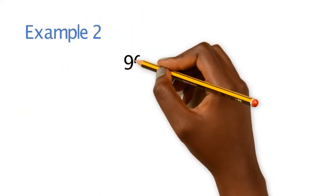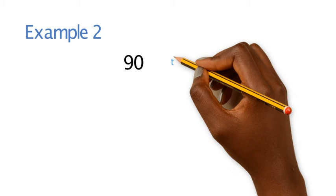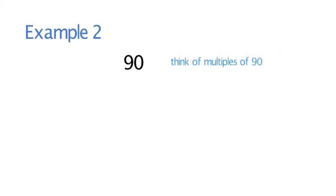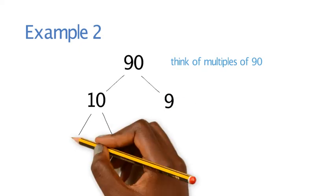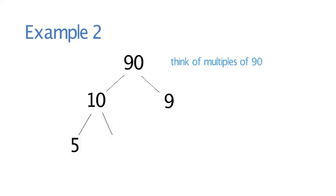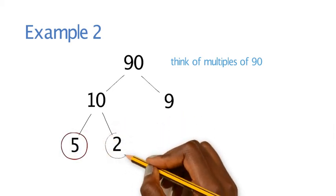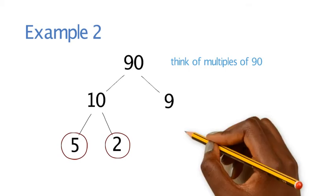Another example, if we have 90, we're going to think of multiples of 90. You could have 10 and 9. Then break down 10 further. You could have 5 and 2 because 5 times 2 is 10. We need to circle these because they're prime numbers, so we stop there in terms of that.